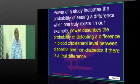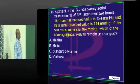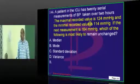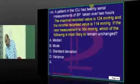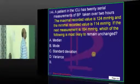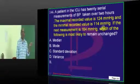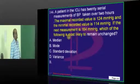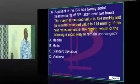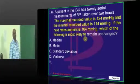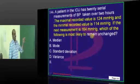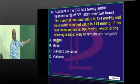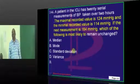Now, a patient's BP was recorded in ICCU. Maximum recorded value was 124, minimum was 114. But suddenly you discovered 164. When such a sudden big value comes, which of these values won't be affected?